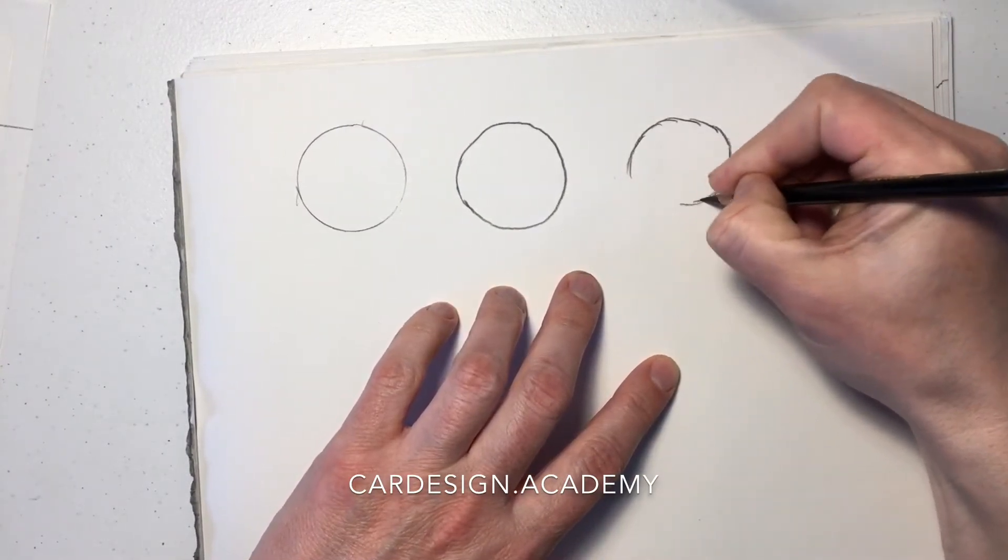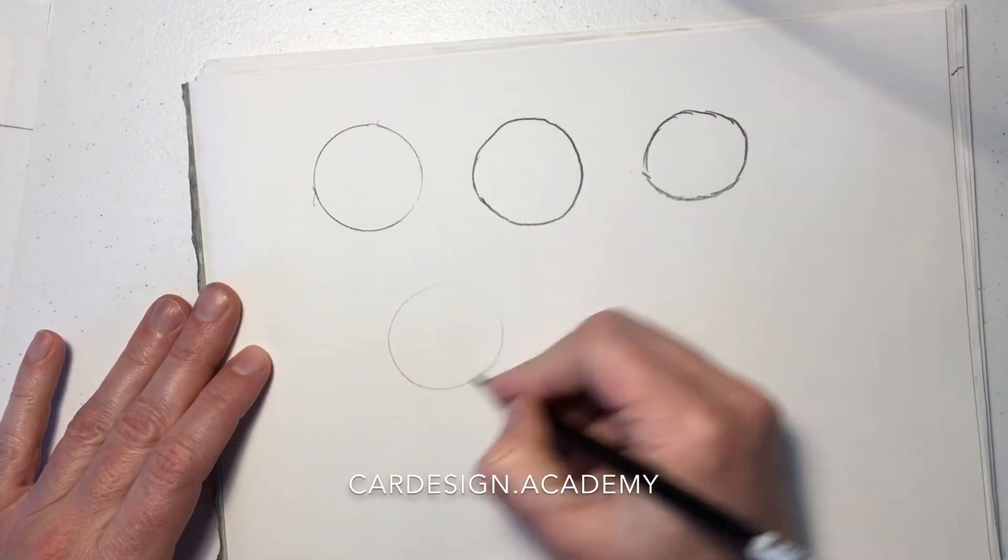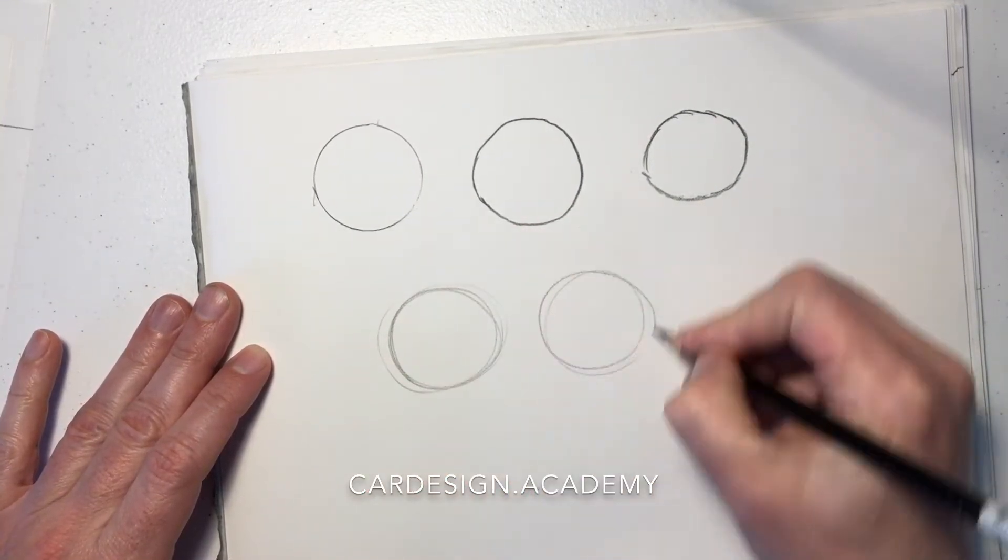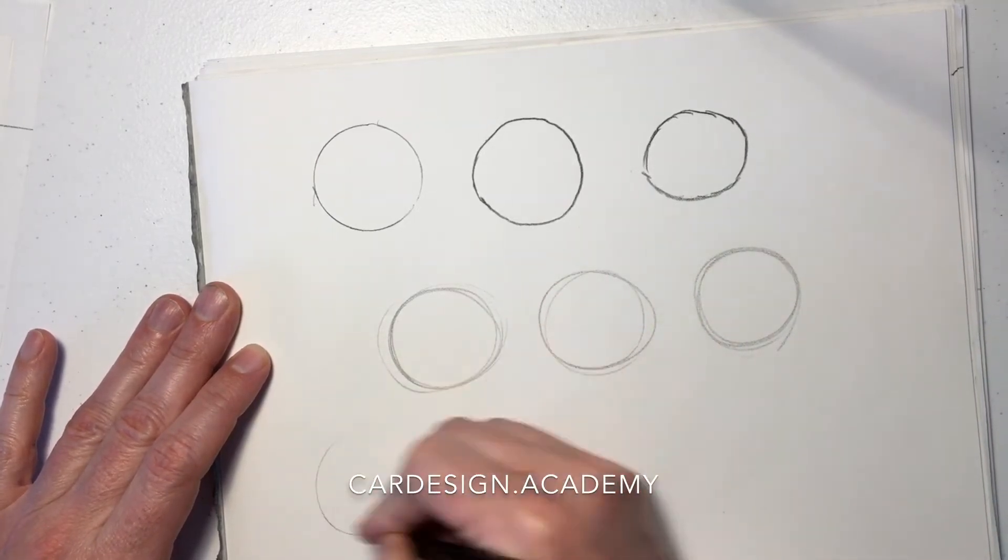It looks more like a potato than a circle to me. What card designers do, once again using their entire arm from the shoulder, is draw swift, deliberate, confident circles.